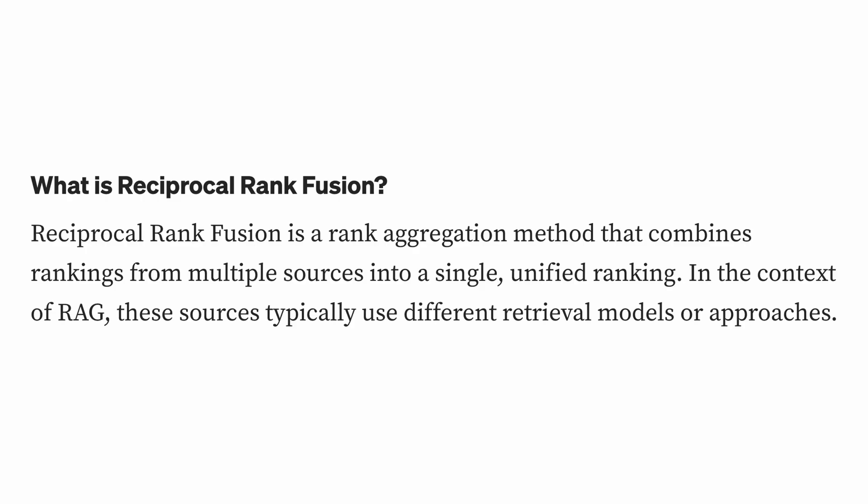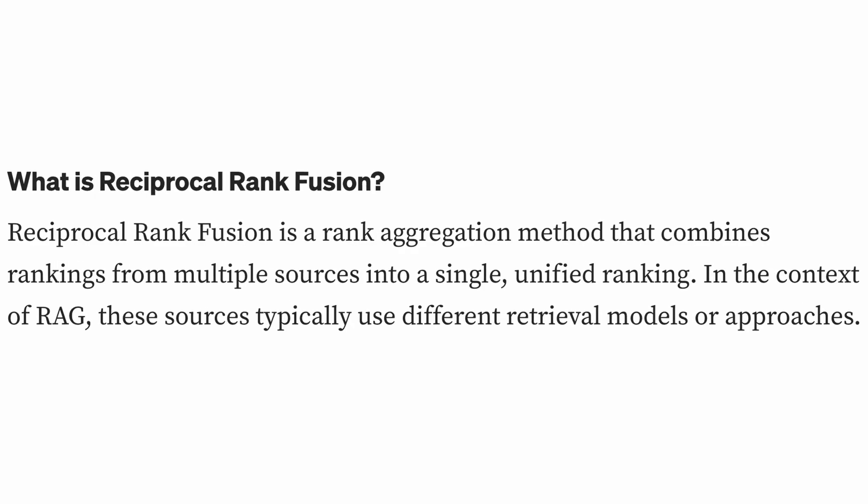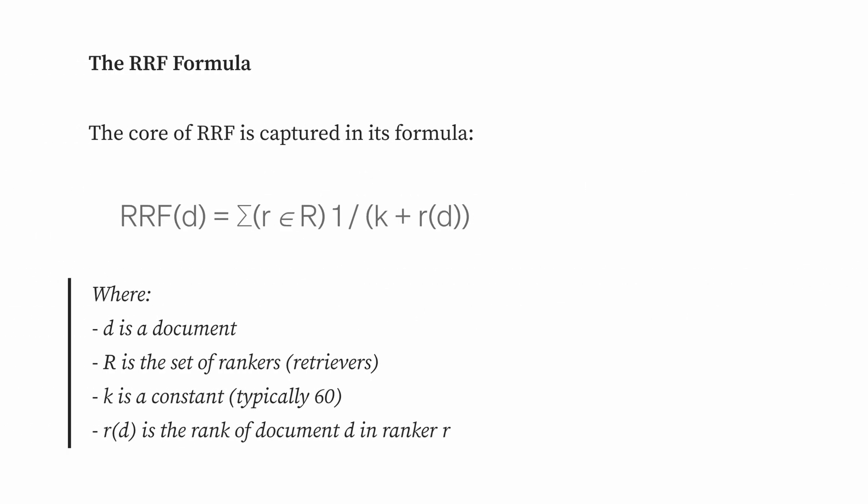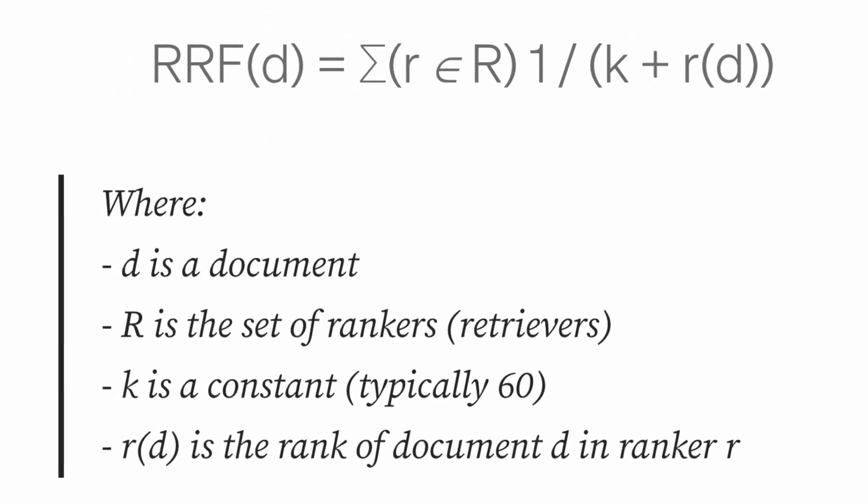With hybrid search, we're going to see if we can write some SQL to combine these results together. We're going to use an algorithm called Reciprocal Rank Fusion. This is a rank aggregation method that combines rankings from multiple sources into a single ranking. We're going to go over all the rankers — full text search and vector search — and compute 1 divided by (K plus the particular ranking), where K defaults to 60, and add them together for each retriever to get a score. The idea is that this gives more weight to higher ranks.